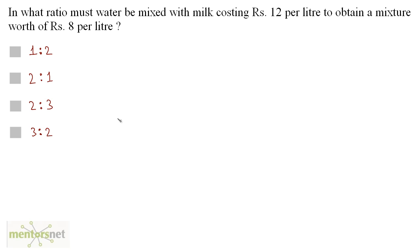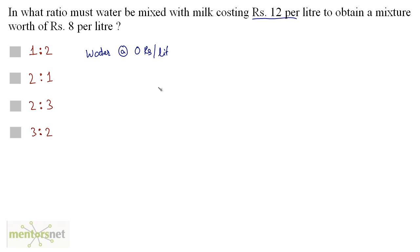In what ratio must water be mixed with milk costing Rs.12 per litre to obtain a mixture worth Rs.8 per litre? We are given the cost of milk as Rs.12 per litre, and we need the cost of water. Water is free, so water's cost is Rs.0 per litre. With this we will solve our question — water is cheaper than milk.